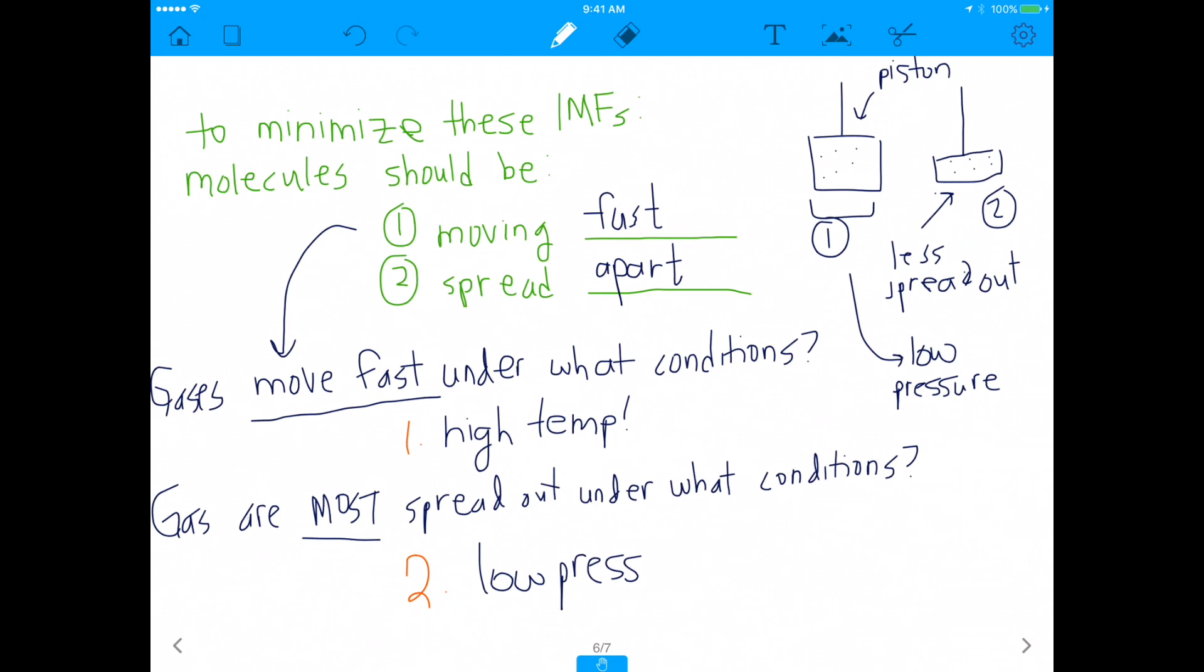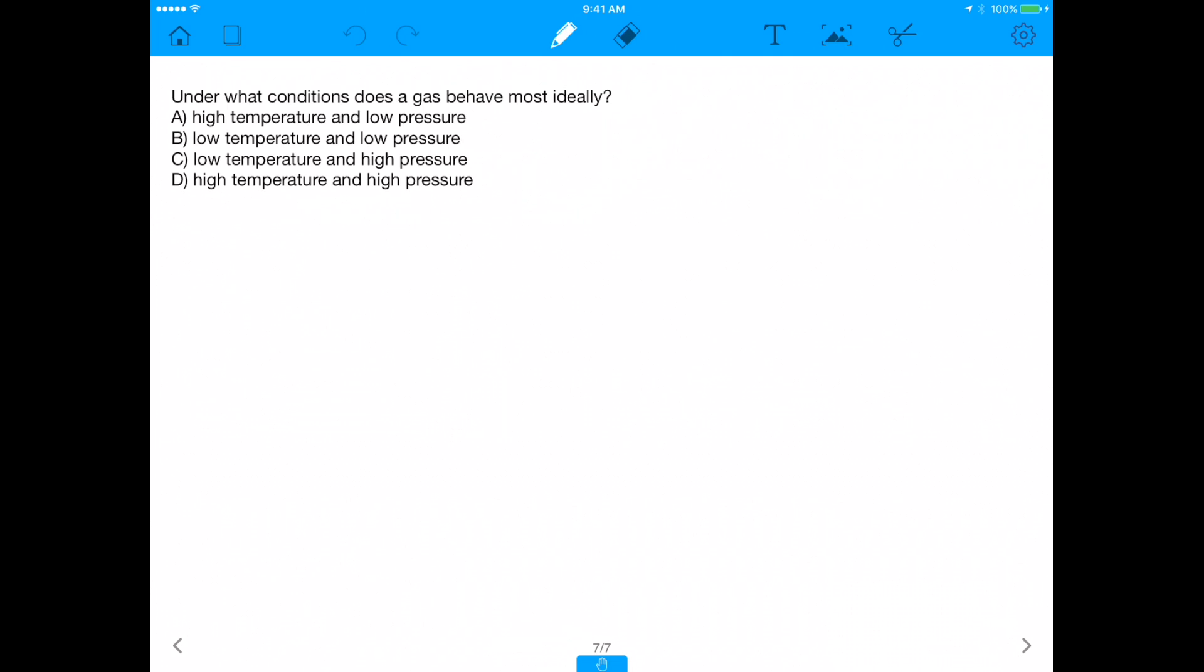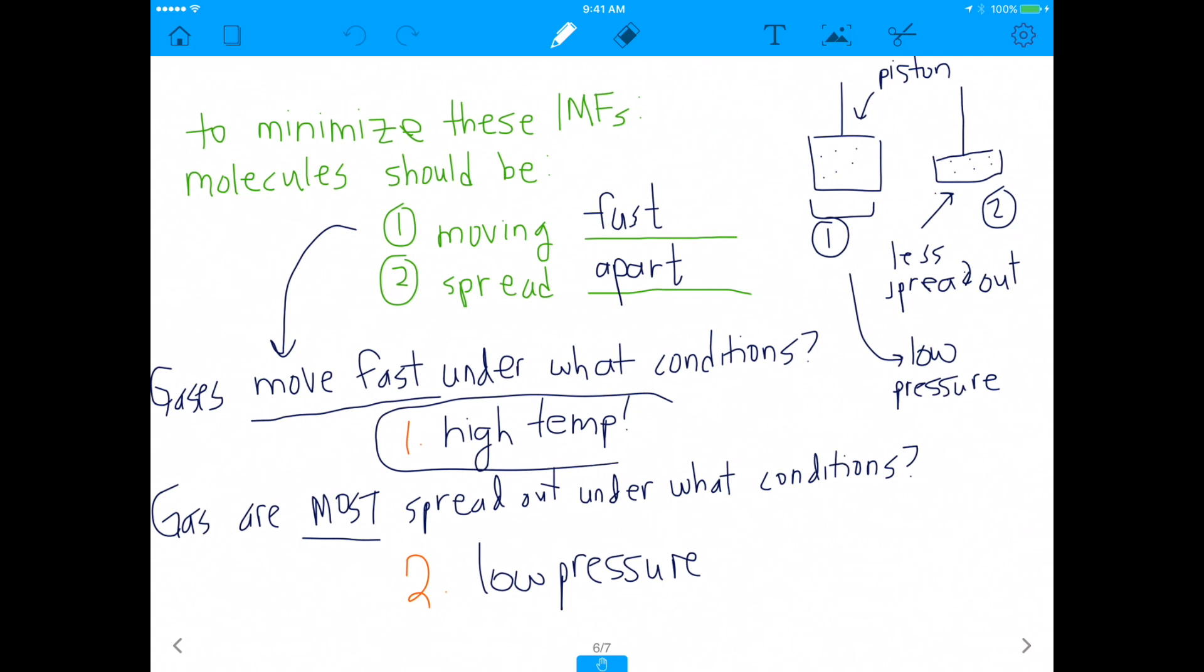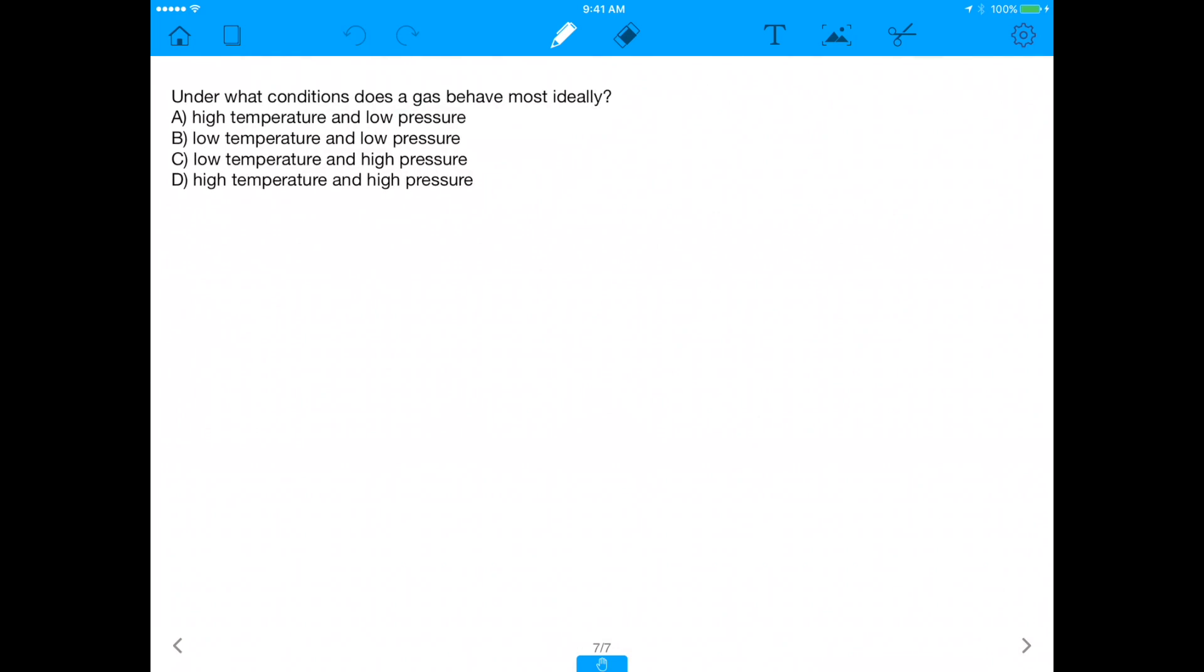And with that, we've actually figured out the answer to this question, under what condition does a gas behave most ideally? And according to our aforementioned analysis, it is under high temperature and low pressure. So, the answer is high temperature and low pressure, which is A. The answer is A.